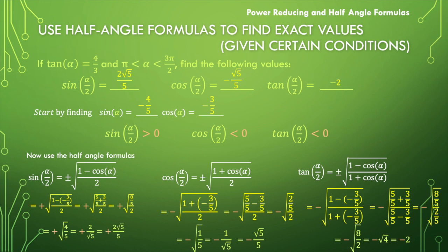One other thing to keep in mind: if you know the sine and the cosine of a given angle, you can find the tangent by simply dividing. So if we take 2 square root of 5 over 5 and divide it by negative square root of 5 over 5, we would still get negative 2. Either way is fine and perfectly justifiable.